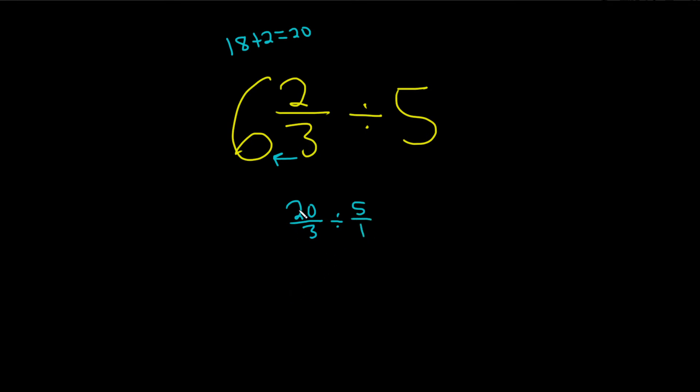Division is the same thing as multiplication by the reciprocal. So this is 20 over 3. We change the division to a times, and then we just flip this number. So 1 over 5.